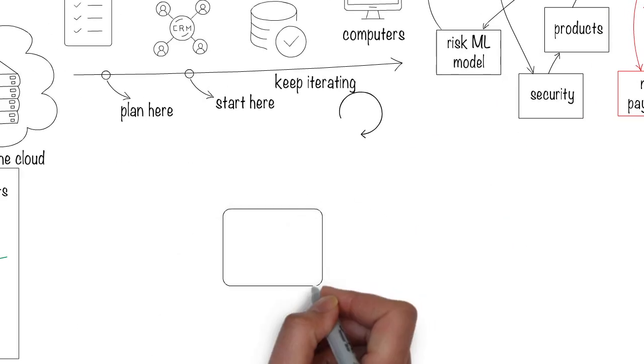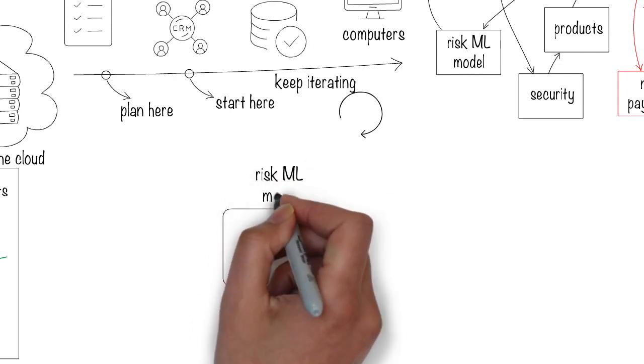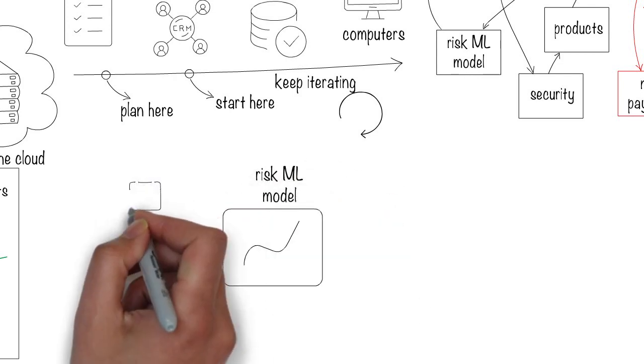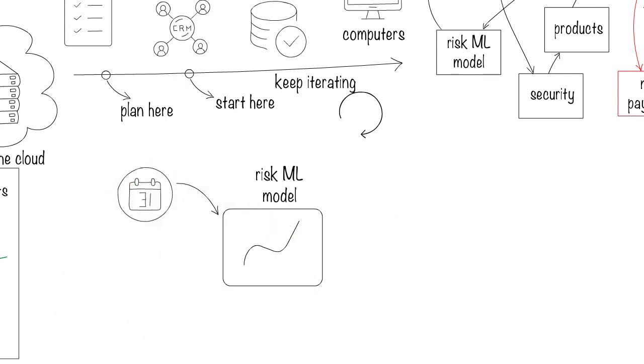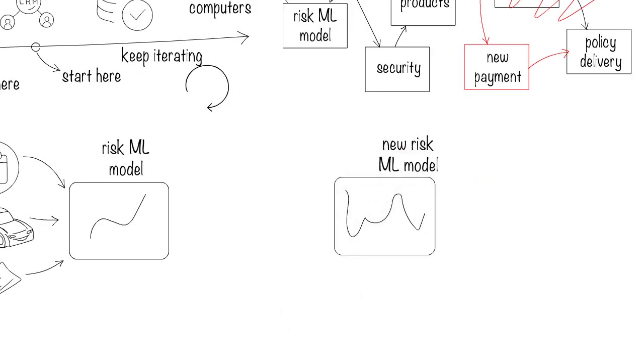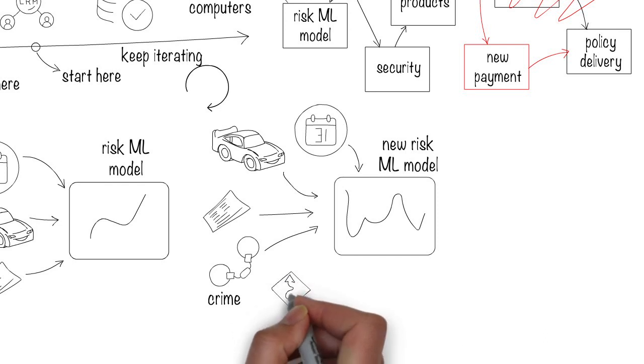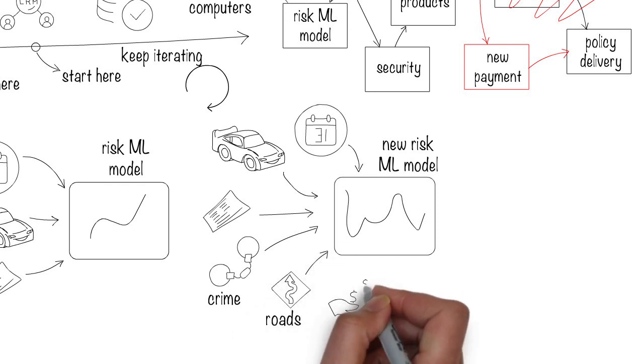But machine learning models are difficult to modularize. Today your model might accept n dimensional data, but later you might add more dimensions. For example, for computing the insurance risk of a customer, today you might use their age, car model, and driving violations. Later you might want to add the crime rate, road conditions, and the customer's income.